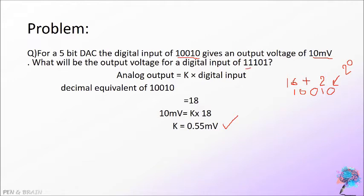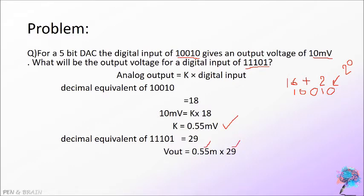By using this K value, we can find the analog output of 1, 1, 1, 0, 1. The decimal equivalent of 1, 1, 1, 0, 1 is 29. Then, V out is equal to K value and decimal equivalent value. So, the answer will be 15.95 millivolt.